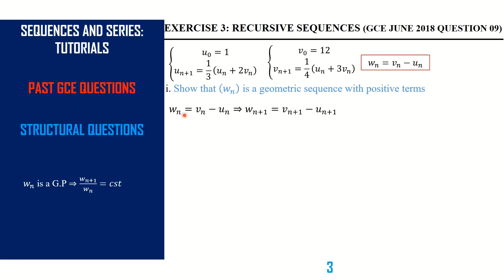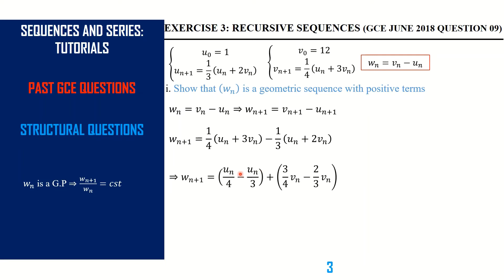To show that w(n) is geometric, this is what we need to show. We have information about w(n) — it is v(n) minus u(n). So we need to find w(n+1). w(n+1) is v(n+1) minus u(n+1). We have information about v(n+1) and u(n+1), so our w(n+1) would be v(n+1) minus u(n+1). We bring like terms together and distribute the one-quarter, getting u(n)/4, then distribute to get u(n)/3.